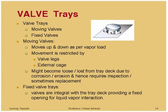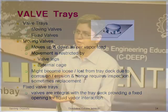Valve trays have two essential types: moving valve and fixed valve. In a moving valve tray, the valve moves up and down depending on vapor flow from below. In a fixed valve tray, the valves are punched out of the deck itself. Moving valves move up and down as per vapor load, and movement is restricted by valve legs — the maximum lift depends on the leg length. There are legged valves and caged valves (a cage and disc). This functionality offers larger turndown flexibility compared to sieve or bubble cap trays.